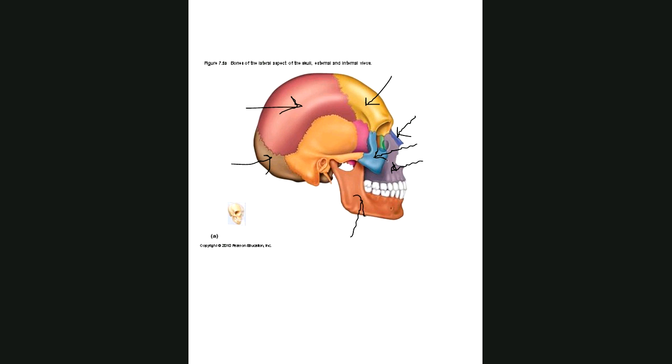On our temporal bone, we have the external acoustic meatus, also called external auditory meatus. And this is still part of our temporal bone. It's the zygomatic process of the temporal bone.